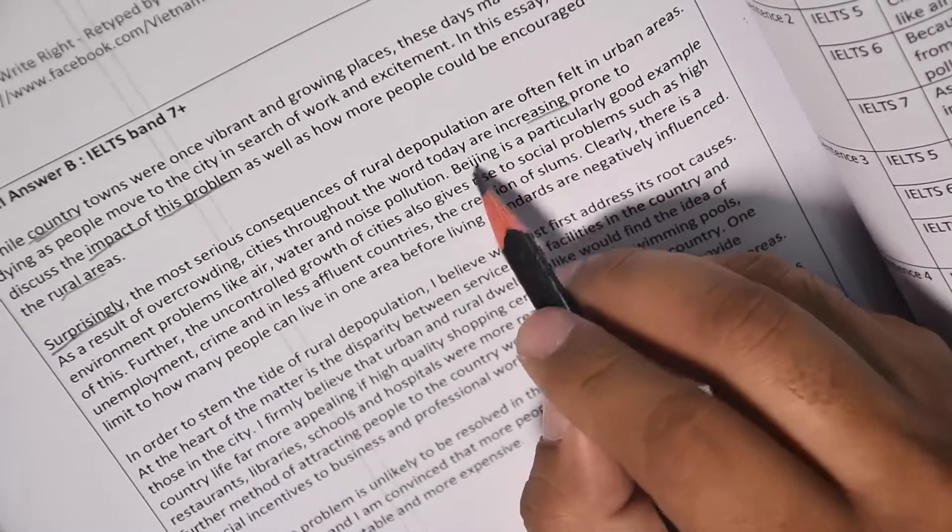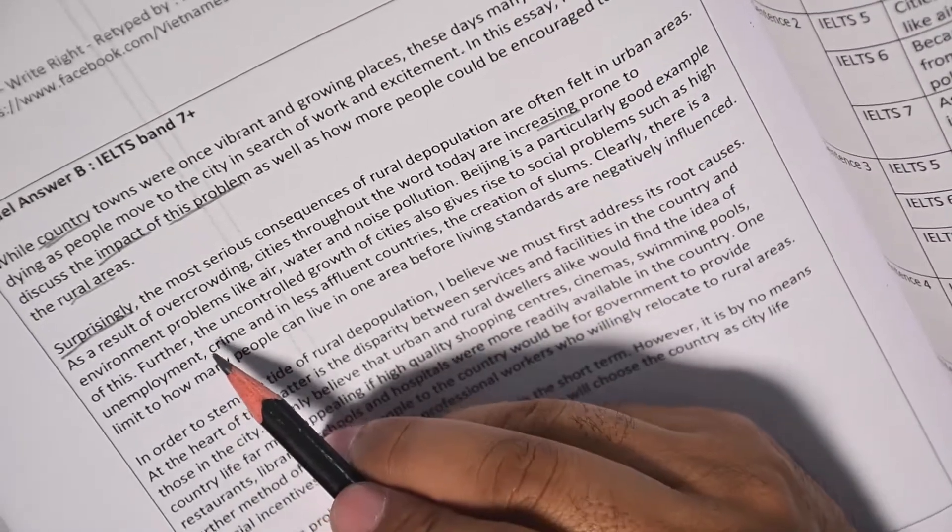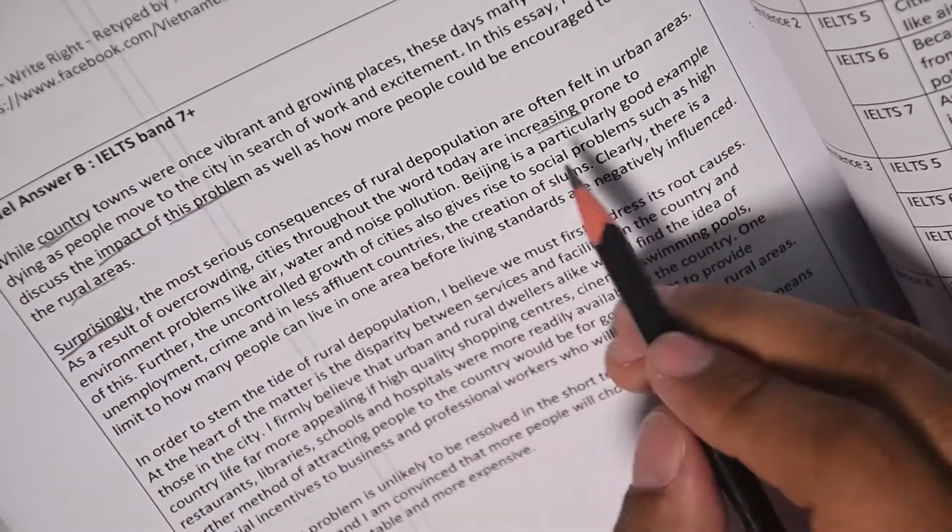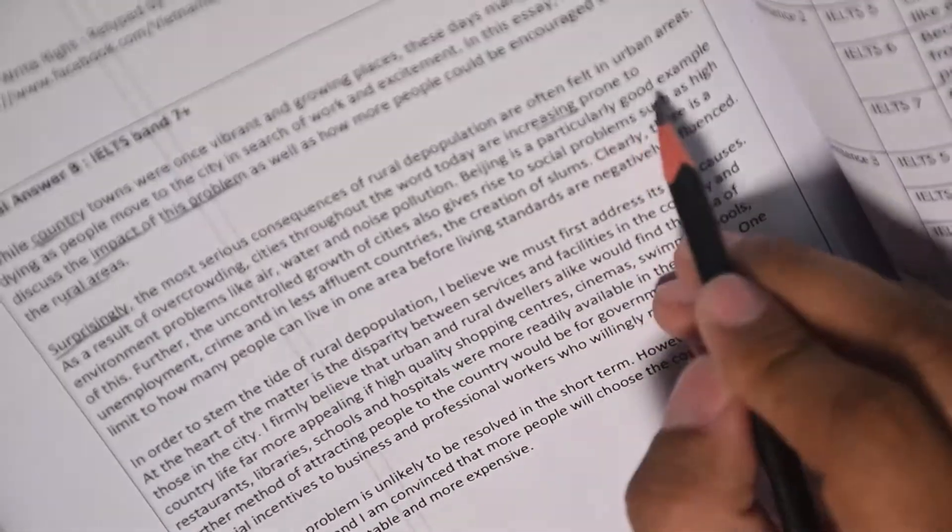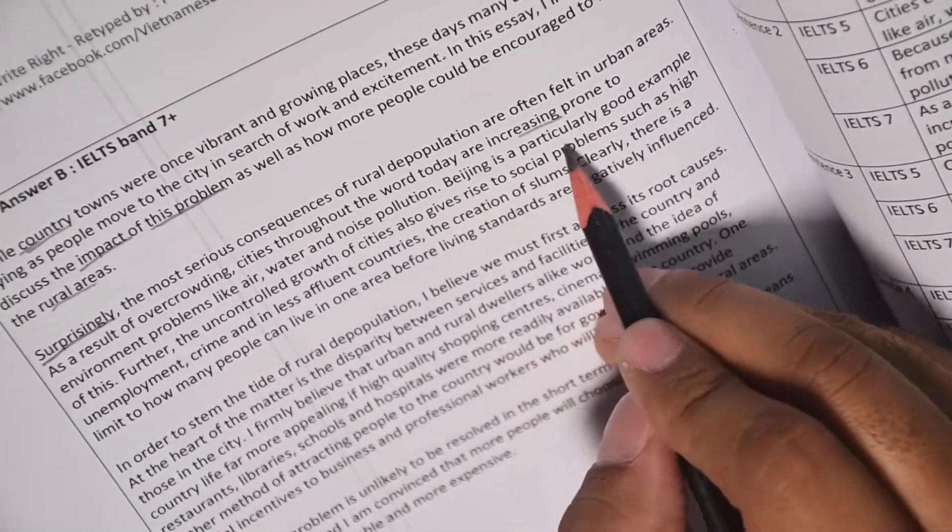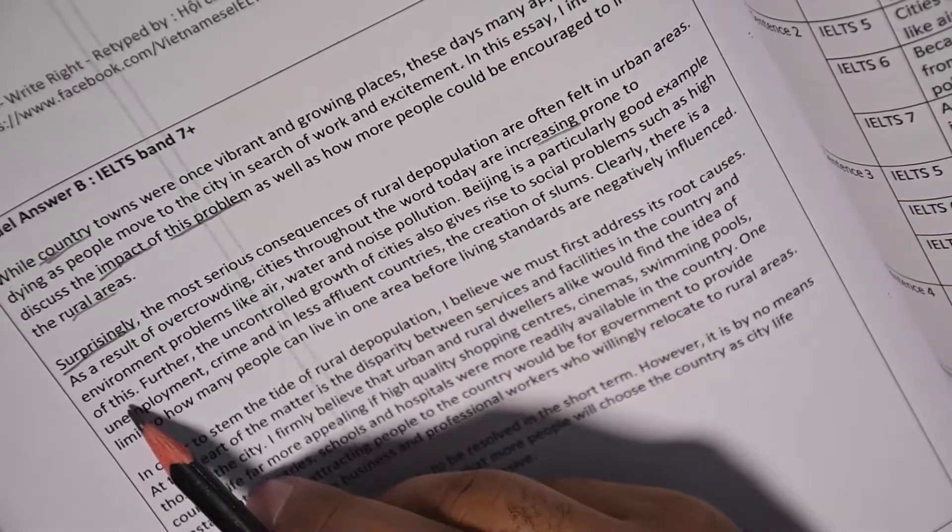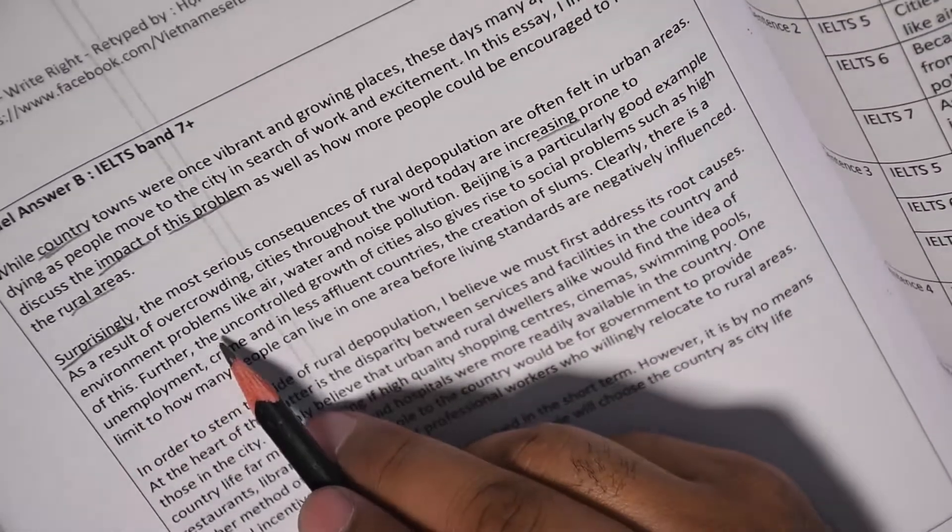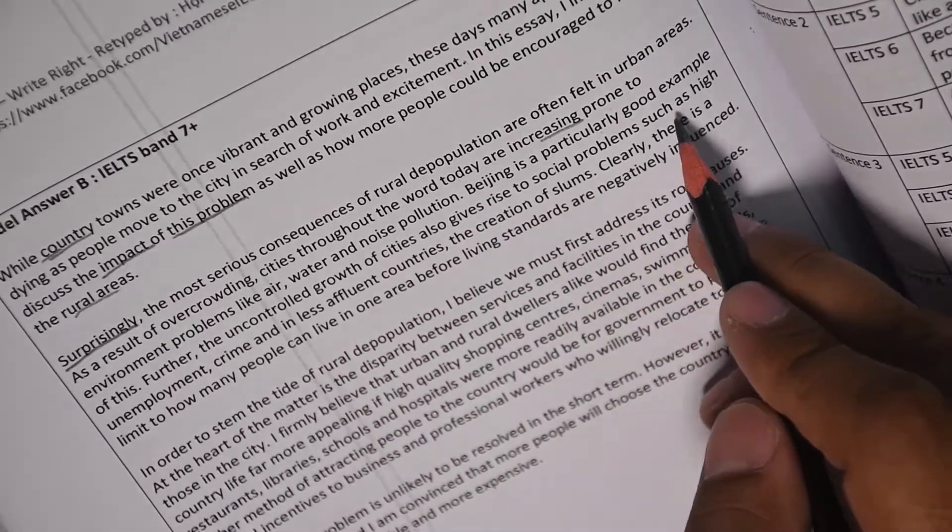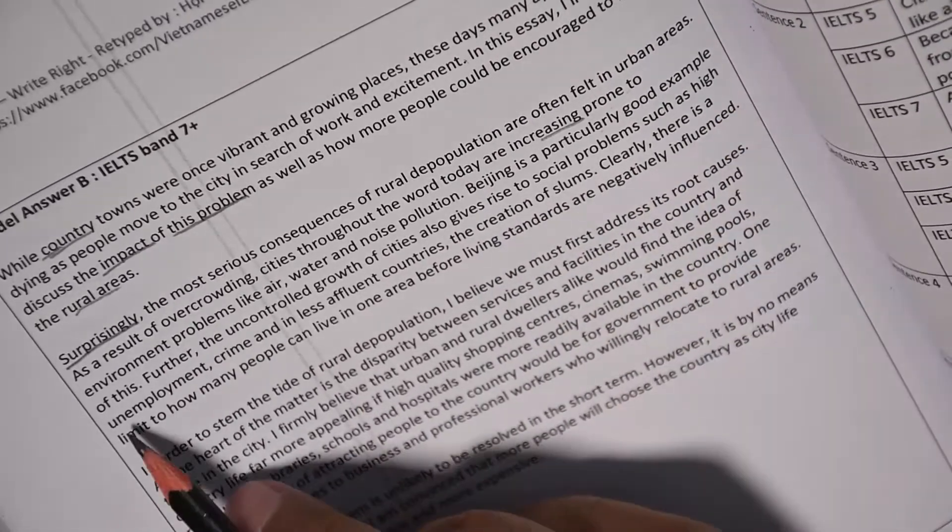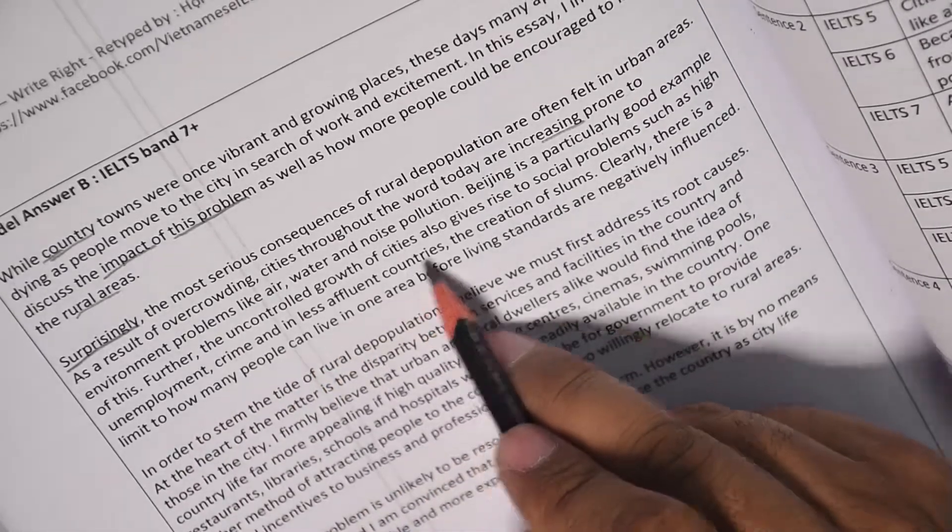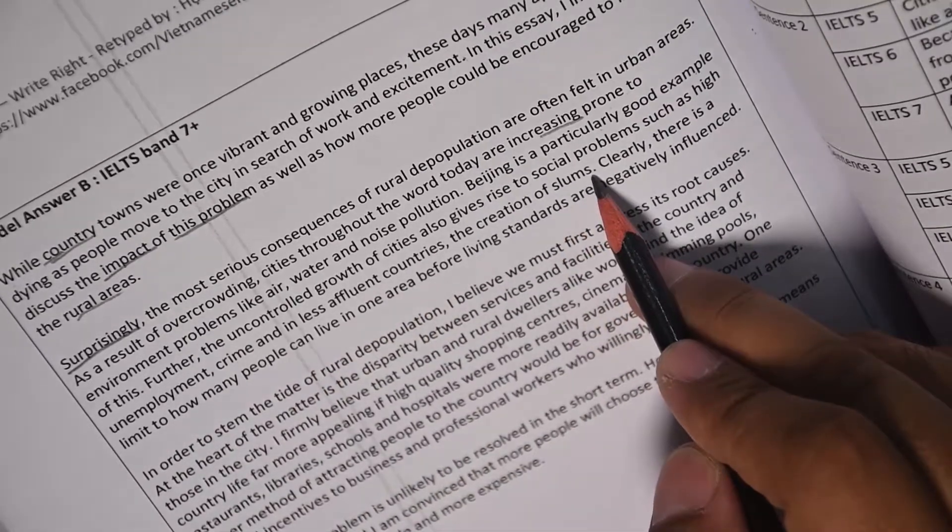Beijing is a particularly good example, see now global example. Beijing is a particularly good example of this. Further, the uncontrolled growth of cities also gives rise to social problems such as high unemployment, crime, and in less affluent countries the creation of slums.